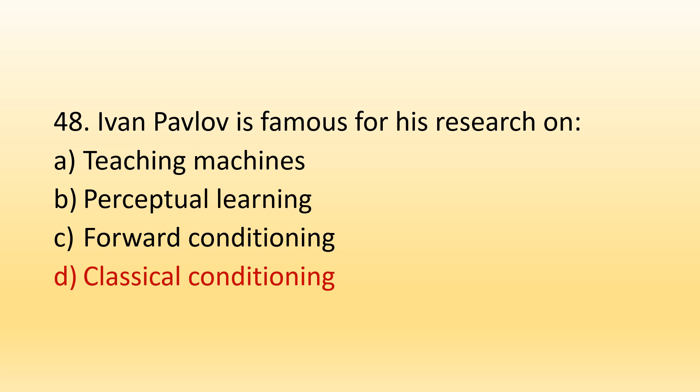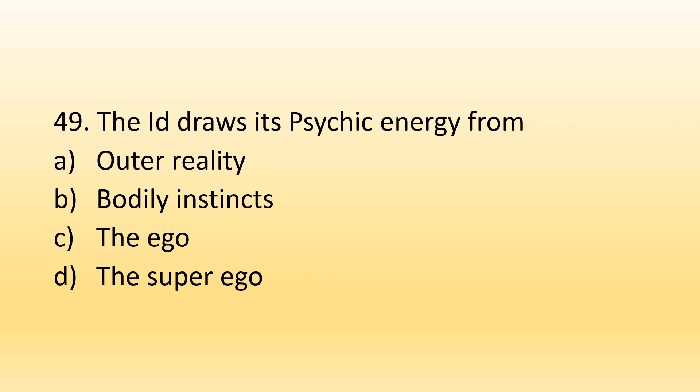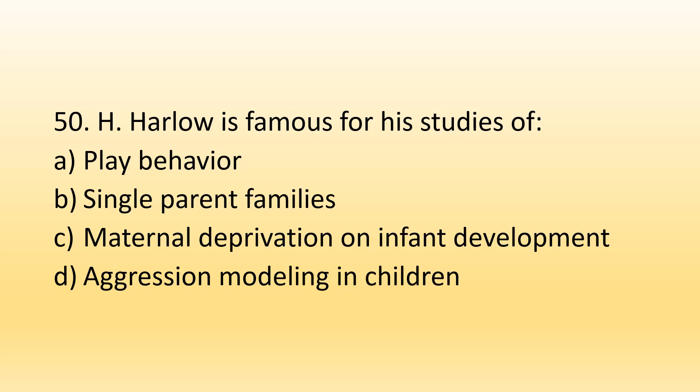Number 49. The id draws its psychic energy from: Option A, Outer reality; Option B, Bodily instincts; Option C, Ego; Option D, Superego. The right option is Option B, Bodily instincts. According to Freud, the id draws its psychic energy from bodily instincts.